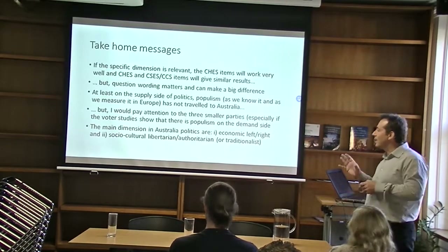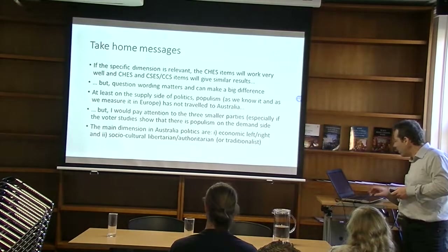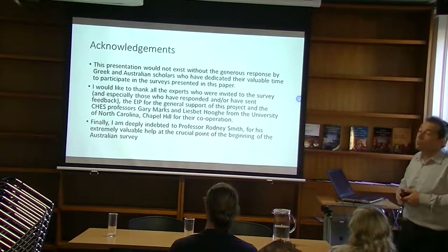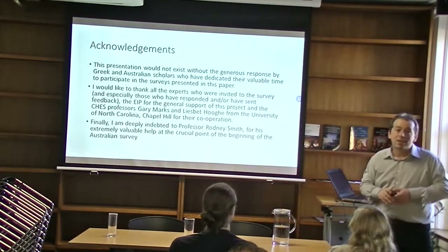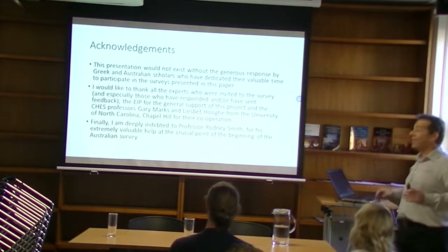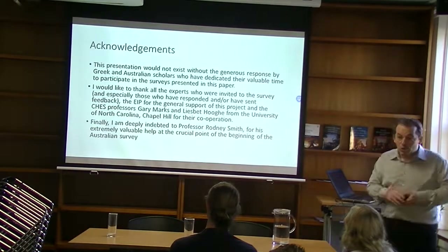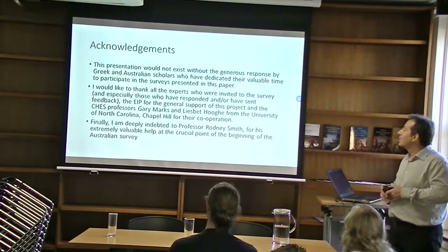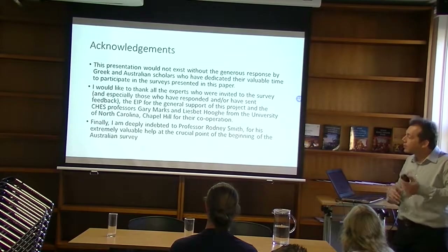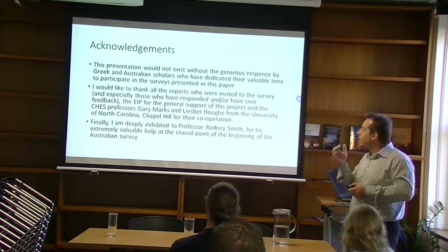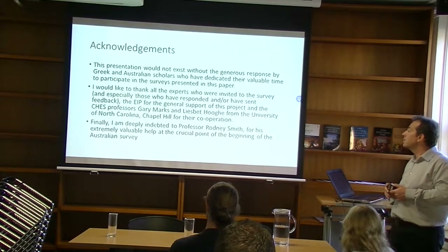The final take-home message is that the main dimensions in Australian politics are economic left-right and socio-cultural dimensions as shown on the map. Closing this presentation, I would like to thank the experts who participated in the surveys — without them there would be no paper, no presentation, no findings. I am also indebted to the Electoral Independent Project, all of you here, and PIPA for the general support. This part is also a cooperation with the Chapel Hill Expert Survey — they were very interested to see the results, so I will notify them immediately about the findings.